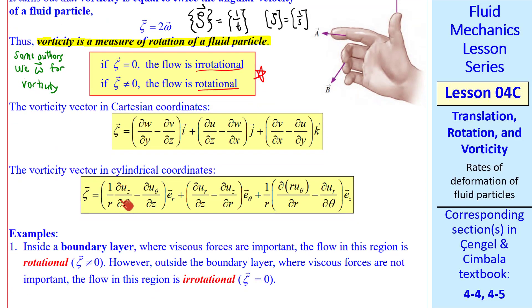Here's the vorticity vector in Cartesian coordinates. We can also write it in cylindrical coordinates. We get some extra 1 over r's occurring. And notice that our unit vectors are in the r, theta, and z directions. e r, e theta, and e z. This is for the coordinates r, theta, z, with corresponding velocity components u r, u theta, and u z.